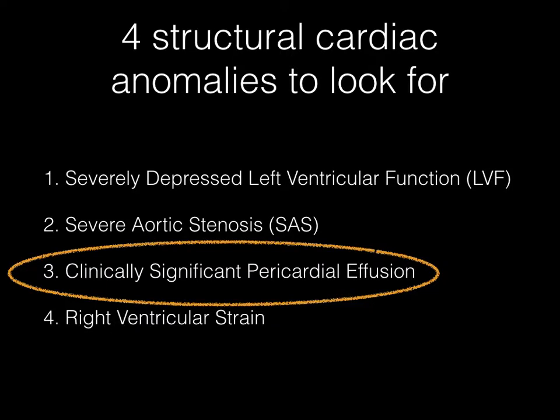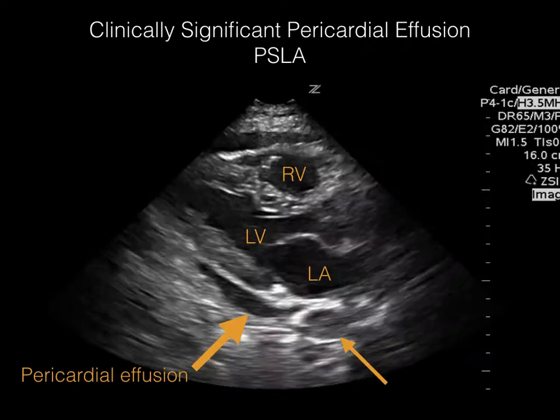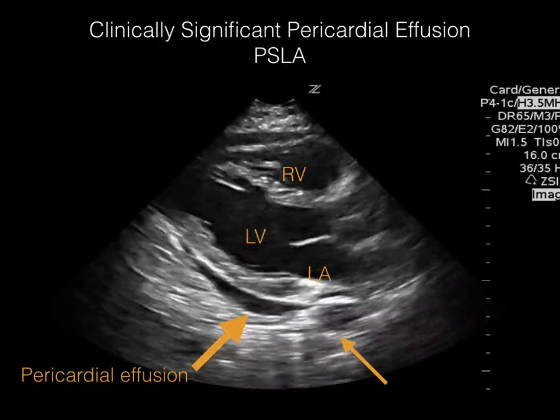The third anomaly we want to look for is clinically significant pericardial effusion. The reason why we use the word 'clinically' is because in the context of syncope, a small pericardial effusion might be clinically significant if you think your patient is having an aortic dissection. In another context, a large pericardial effusion in a patient receiving chemotherapy presenting with syncope may be as clinically significant as the small pericardial effusion of a dissecting aorta. Let's review a few images.